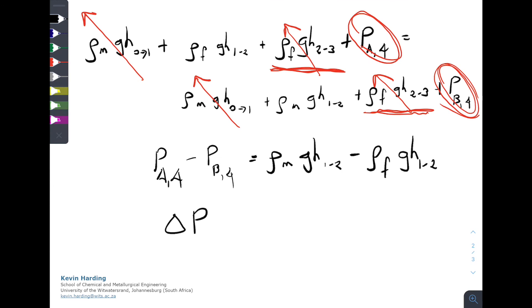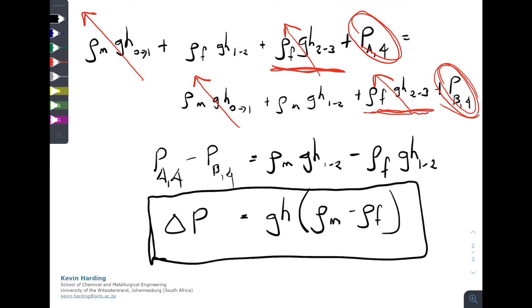I can then write that as a change in pressure, and some texts, because it's a pressure drop, will add a minus in front of it, is equal to the right-hand side, which we can factorize as GH. I will drop the 1 to 2, because that was the naming we had in the diagram, was just H, and that is then the density of the manometer fluid minus the density of the actual fluid, and that there will be our final equation, and the one that we will use.